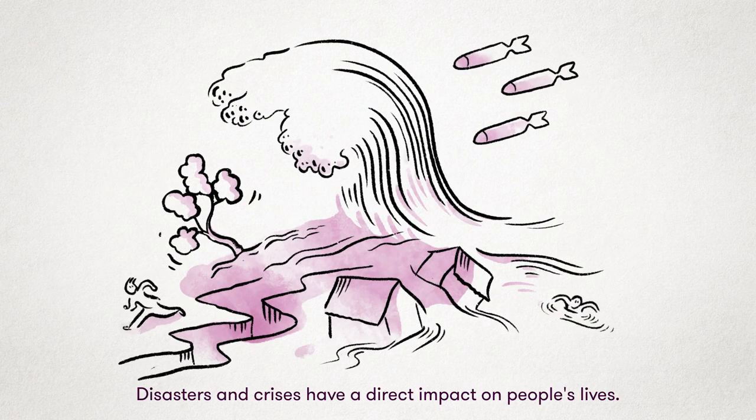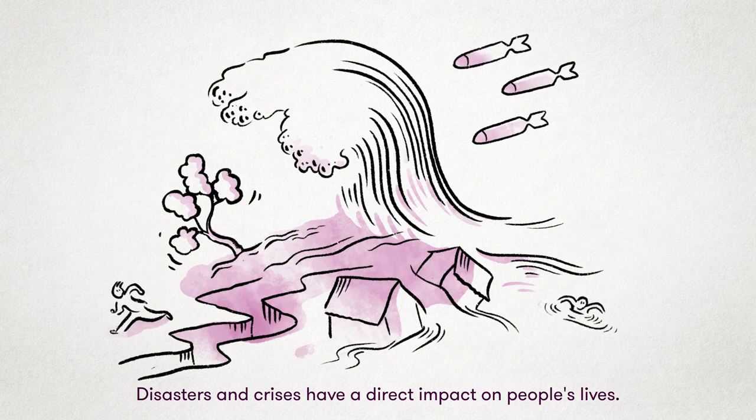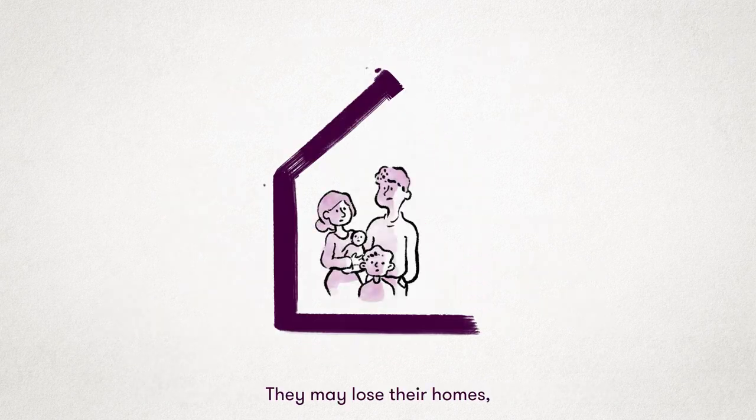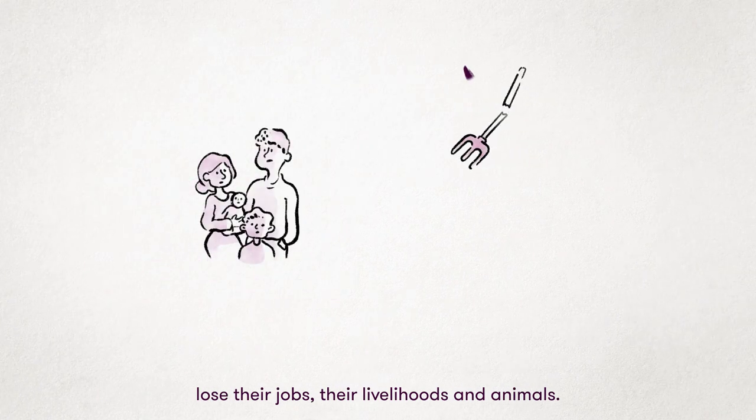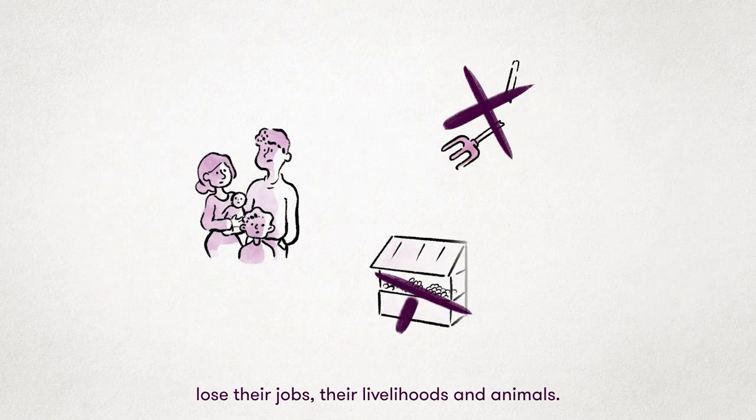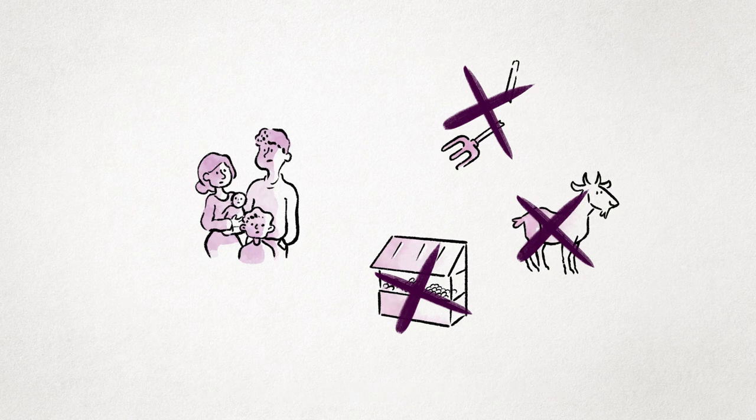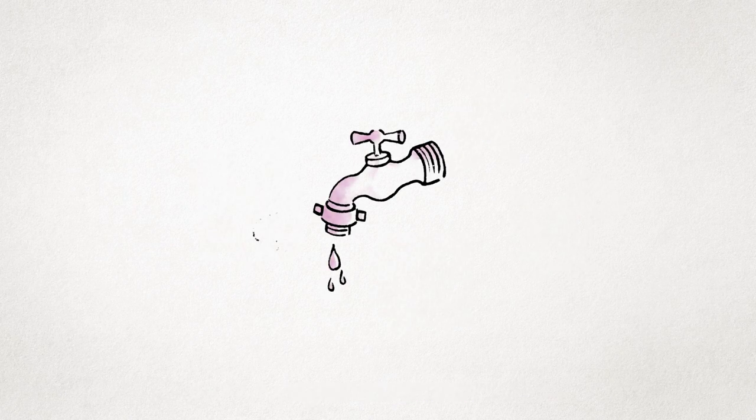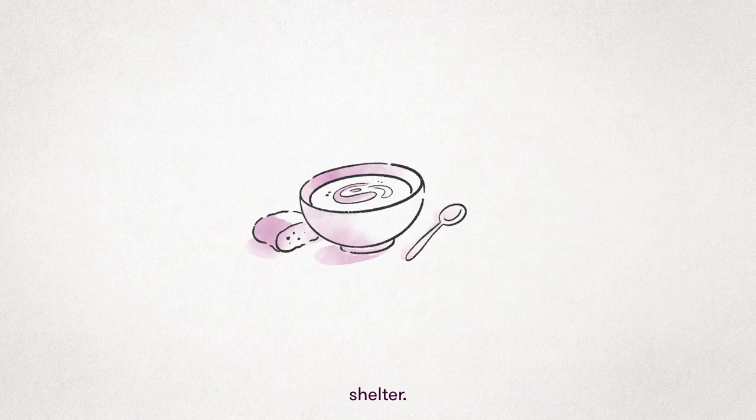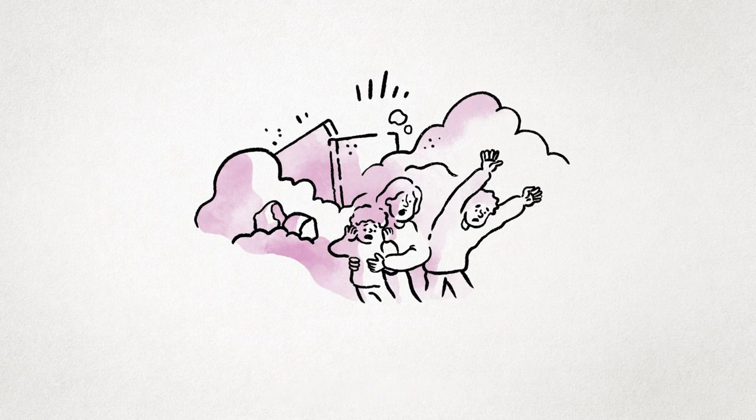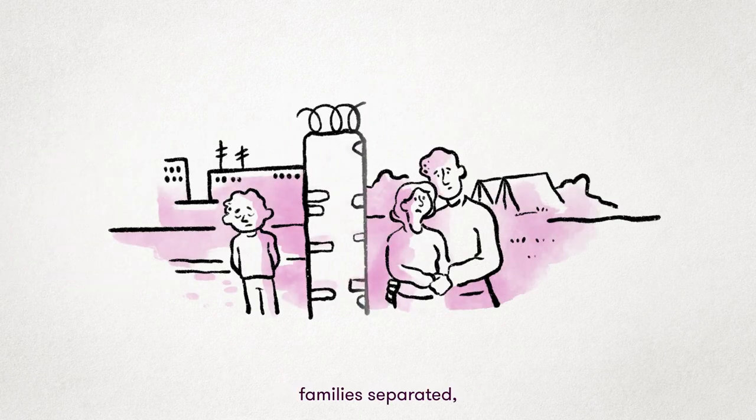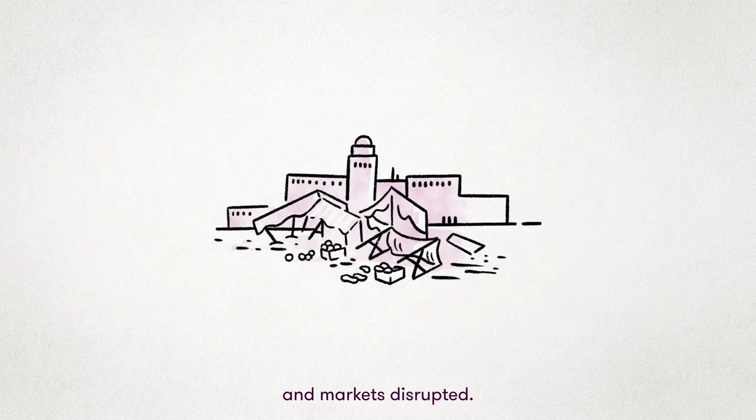Disasters and crises have a direct impact on people's lives. They may lose their homes, be displaced, lose their jobs, their livelihoods, and animals. They need clean water, food, shelter. Some may get sick or injured. Schools may be destroyed. Families separated. And markets disrupted.